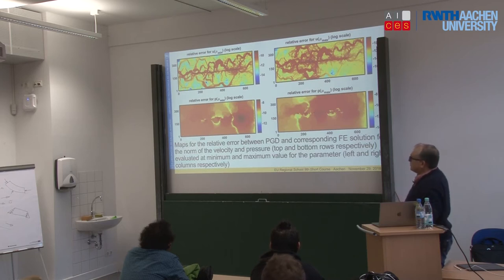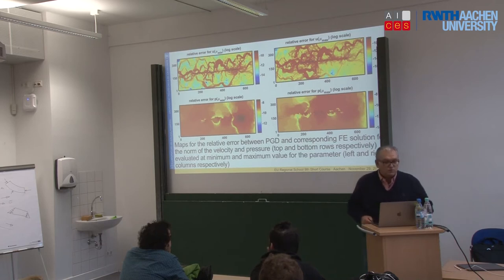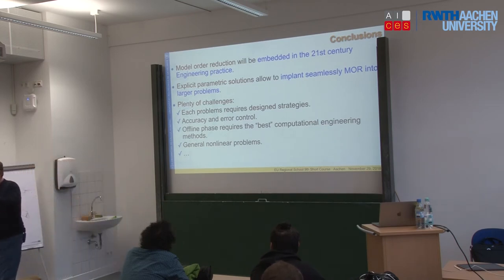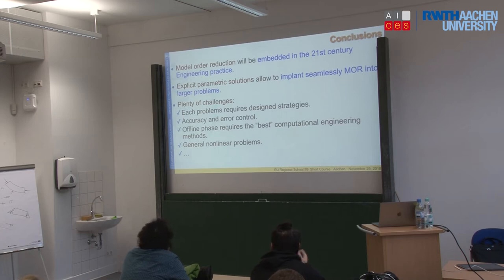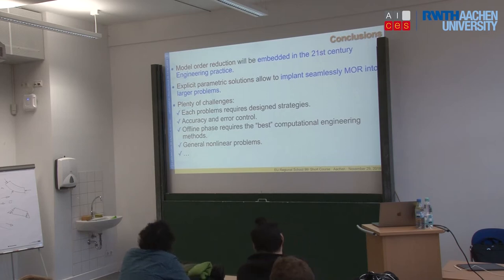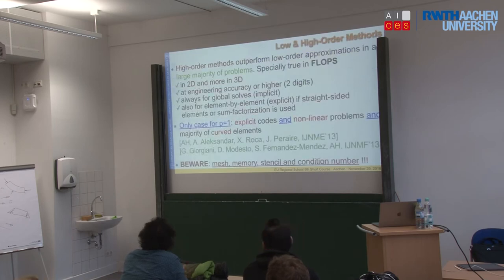To finish this part on model order reduction: this model order reduction is going to be in every recipe in the next years and everybody is going to use it. We use these explicit parametric solutions because of their advantages. We use POD, reduced order basis, reduced basis, and PGD — but for most problems, if we can use PGD, we use it because of these explicit expressions. There are plenty of challenges and plenty of PhD theses to be done in this area. Let me move to low and high order.